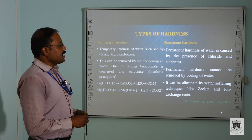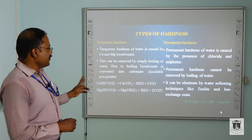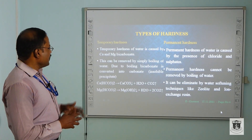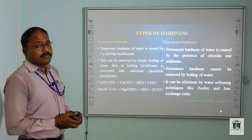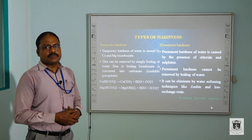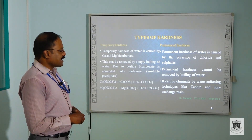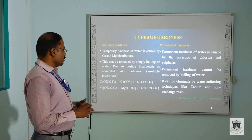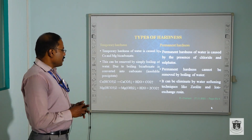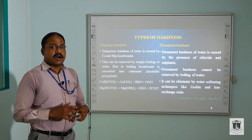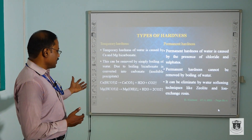Now we are going to discuss the types of hardness. We have two types: temporary hardness and permanent hardness. Temporary hardness is caused by calcium and magnesium bicarbonates — that is, bicarbonates of calcium and magnesium salts. This can be easily removed by boiling of water. When you boil the water, the bicarbonate is converted to insoluble carbonate salts.